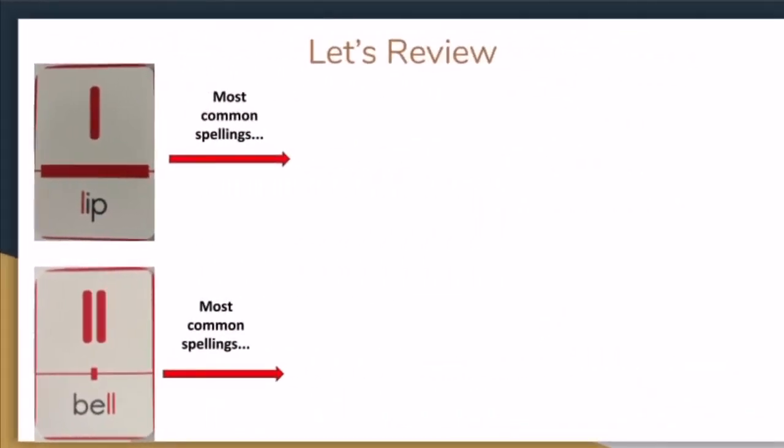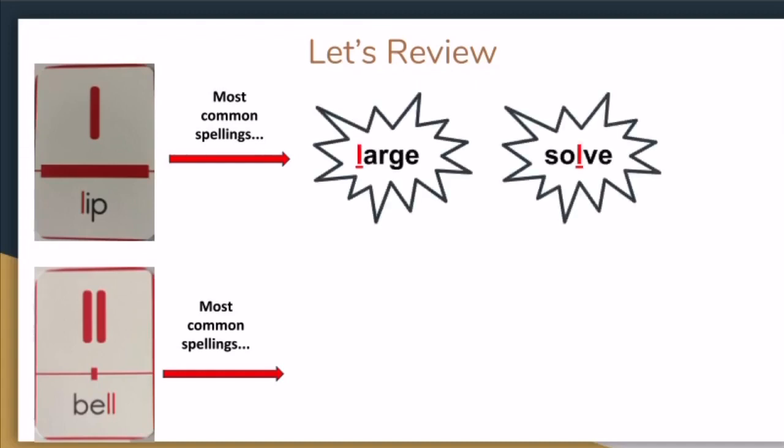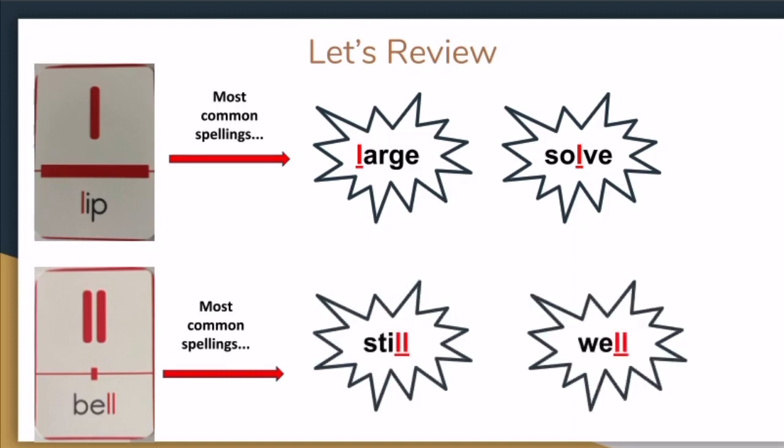Let's take a look at our sound cards. If we look at the sound card L, we can see the sound L is spelled often with one L because the power bar is so full. Let's look at examples of some common spellings. We have large and solve. If we look at the bottom sound card, we can see that the LL spelling does not occur that often. Let's look at some most common spellings. We have still and well. LL is most often found at the end of words.